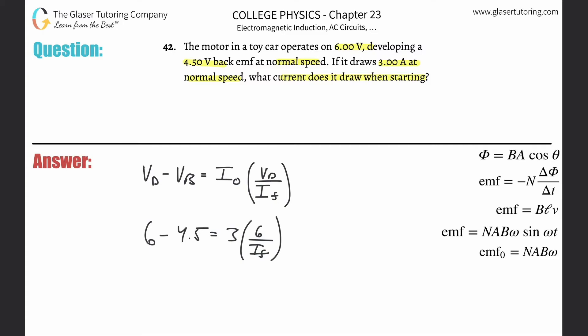So this is 6 minus 4.5, right? So that works out to be 1.5. That's 18 then over I sub f. Just simply cross multiply now.